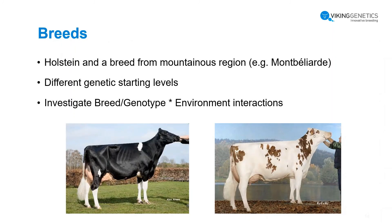We aim to include two breeds: Holstein and a more maintenance-oriented breed like the Montbéliard. They will of course have different genetic starting levels — the Holstein cattle is more toward intensive production right now, and Montbéliard is more toward the grazing system. We will see what we can do with those different starting levels, and we want to investigate those interesting breed-by-genotype-environment interactions.